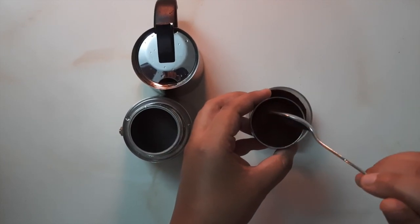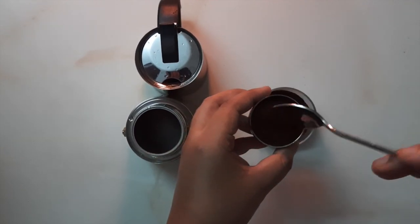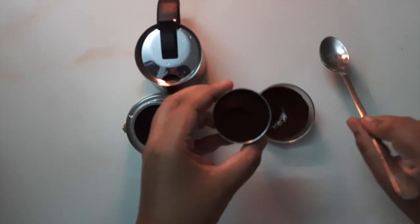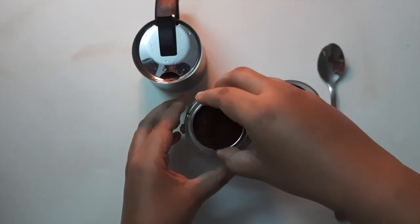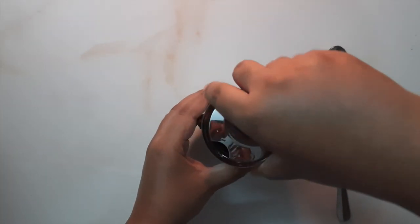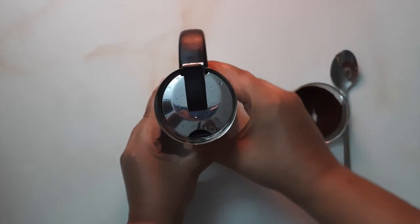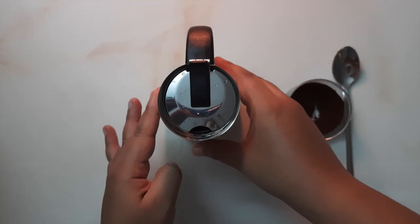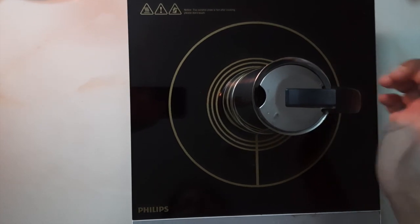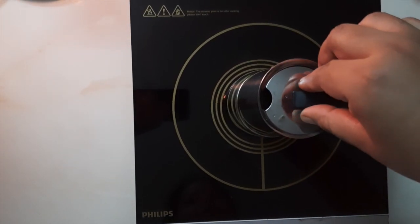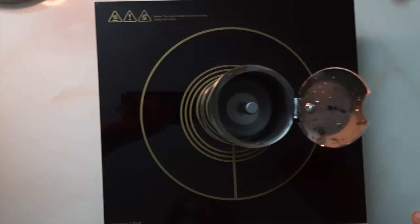And fill it here. Now once this is filled, we have to place it here, and as I said, we have to close the lid. Now this is ready to be put on top of a stove or an induction. I'm putting the pot on my induction and waiting for the magic to happen. When using induction, make sure the temperature is very low.